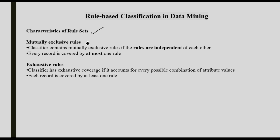Now let's look at the characteristics of a rule set. The first characteristic is mutually exclusive rules. Mutually exclusive means the rules are independent of each other — no two rules are triggered by the same record. Every record is covered by at most one rule.